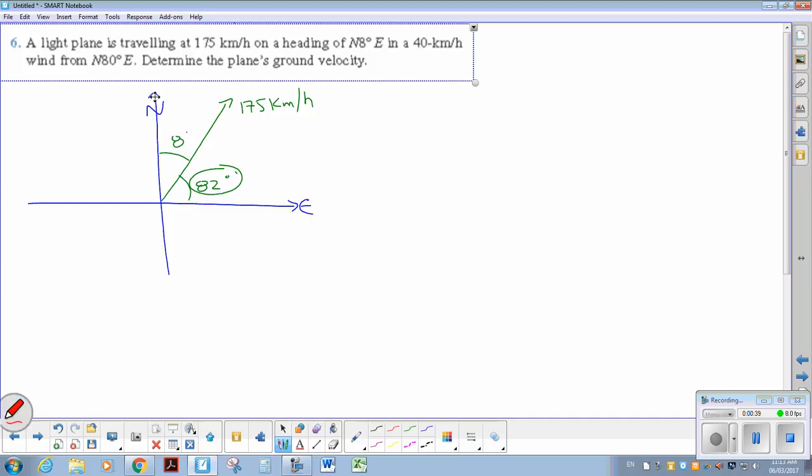The wind vector, it's 40 kilometers an hour from north 80 east, and this is where a lot of people make a problem. So this is what a lot of people draw, and it's not right, and I'll explain the why here.